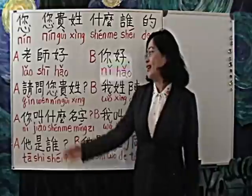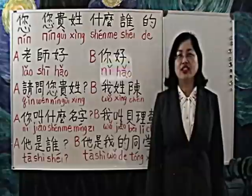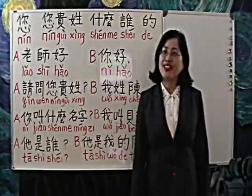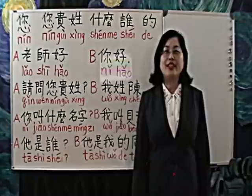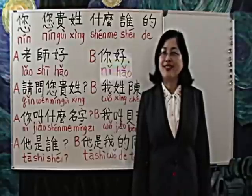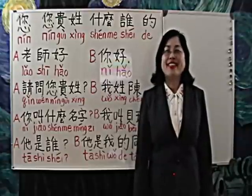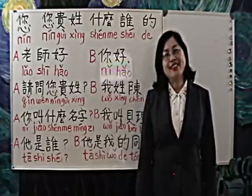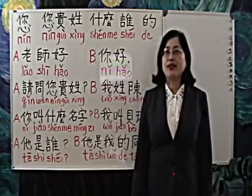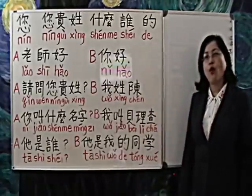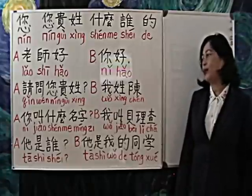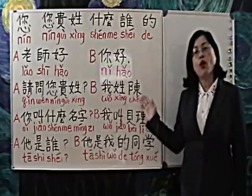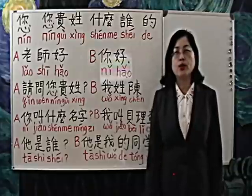贵 means noble or honored. So 贵姓 is a polite expression applied only to others, never to yourself. Never say 我贵姓. When answering, we usually reply with our surname or our full name. For example, reply 我姓陈, or 我叫陈未宣.